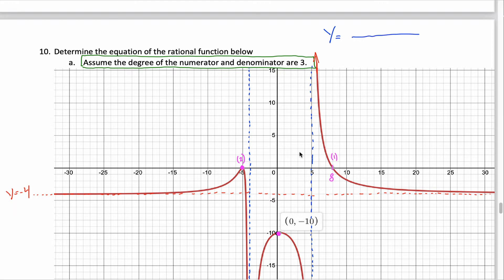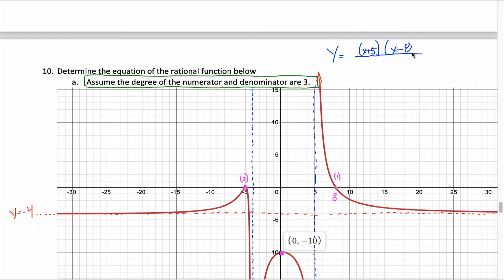Up in the numerator, I know that I have an x plus 5, the factor that corresponds with this root at negative 5, and I have an x minus 8, the factor that corresponds with this root at positive 8. I also know that this factor must be raised to the first power because the multiplicity of this root is 1, and this factor at x plus 5 must be raised to the second power because this root at negative 5 has multiplicity 2. Because there's no holes, there's no other factors up in the numerator, so we can move on to the denominator.